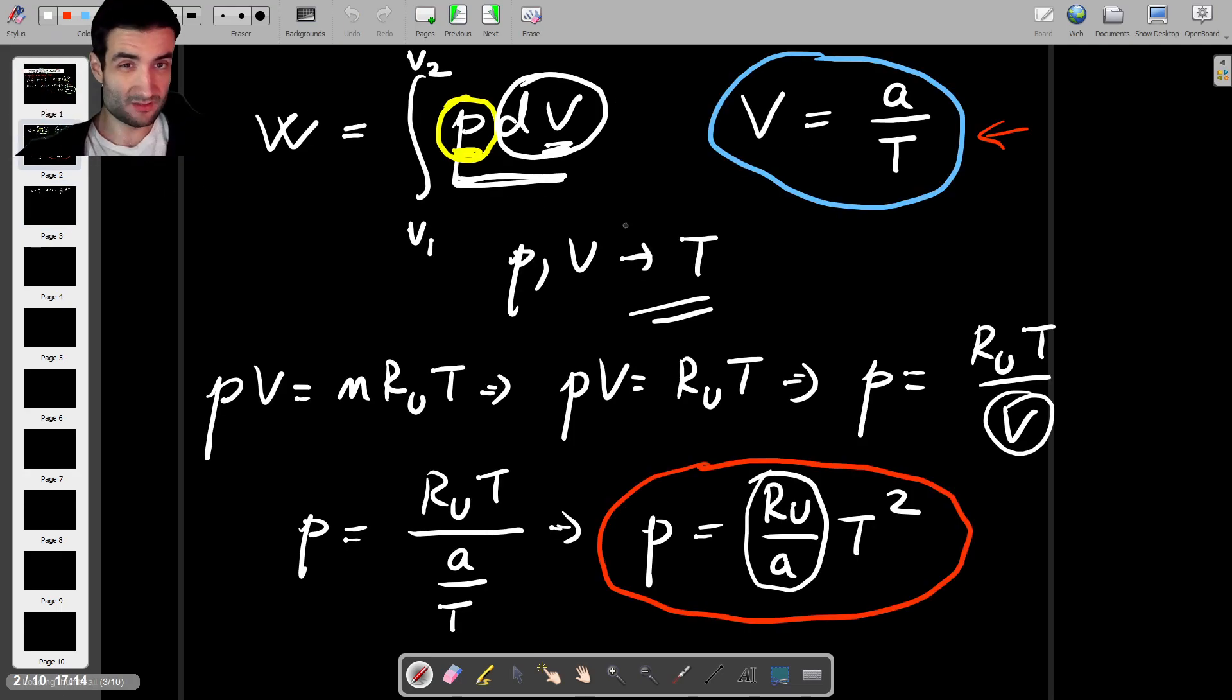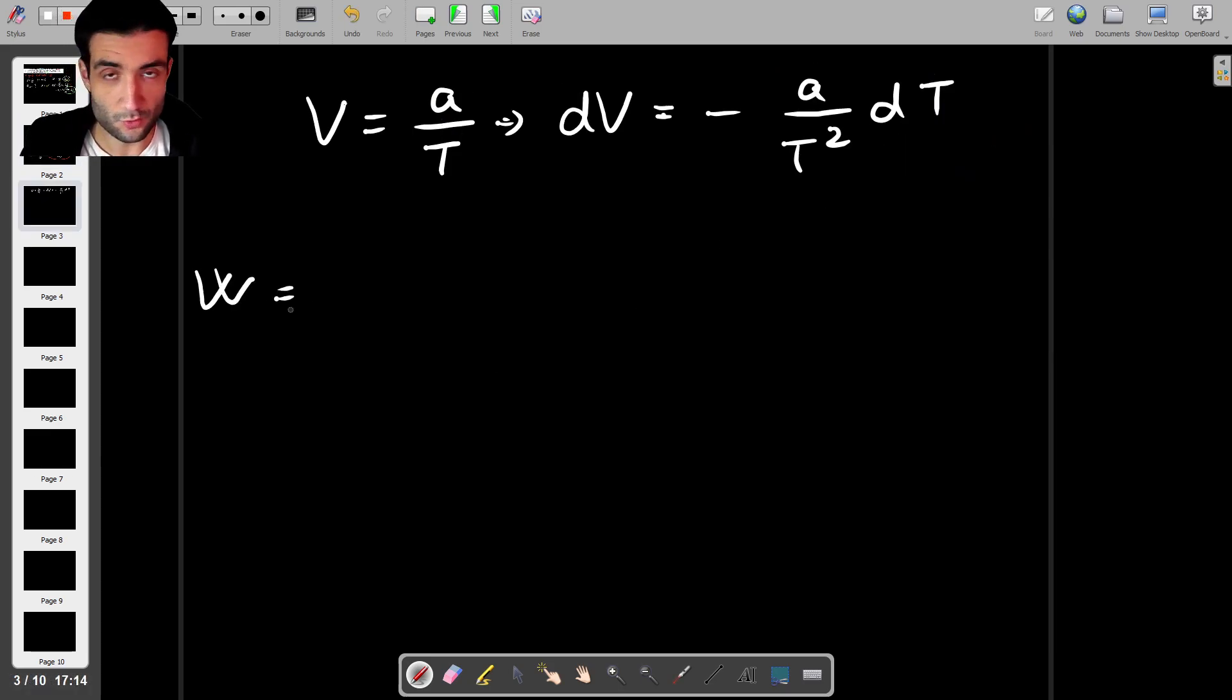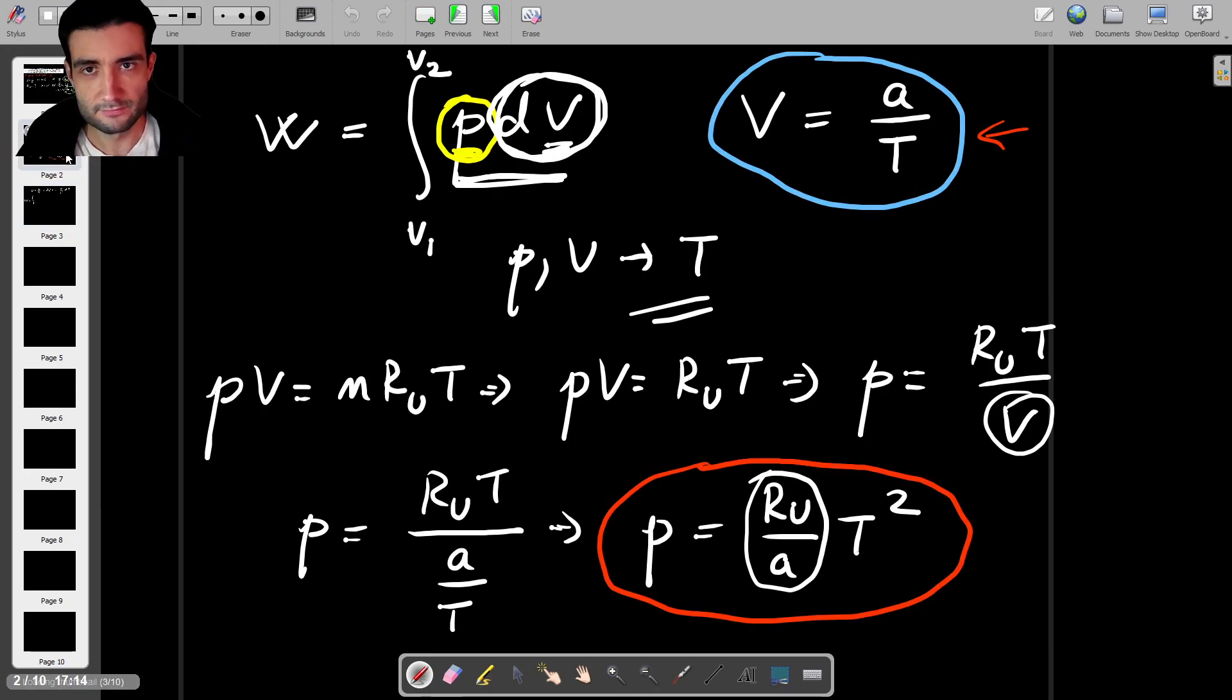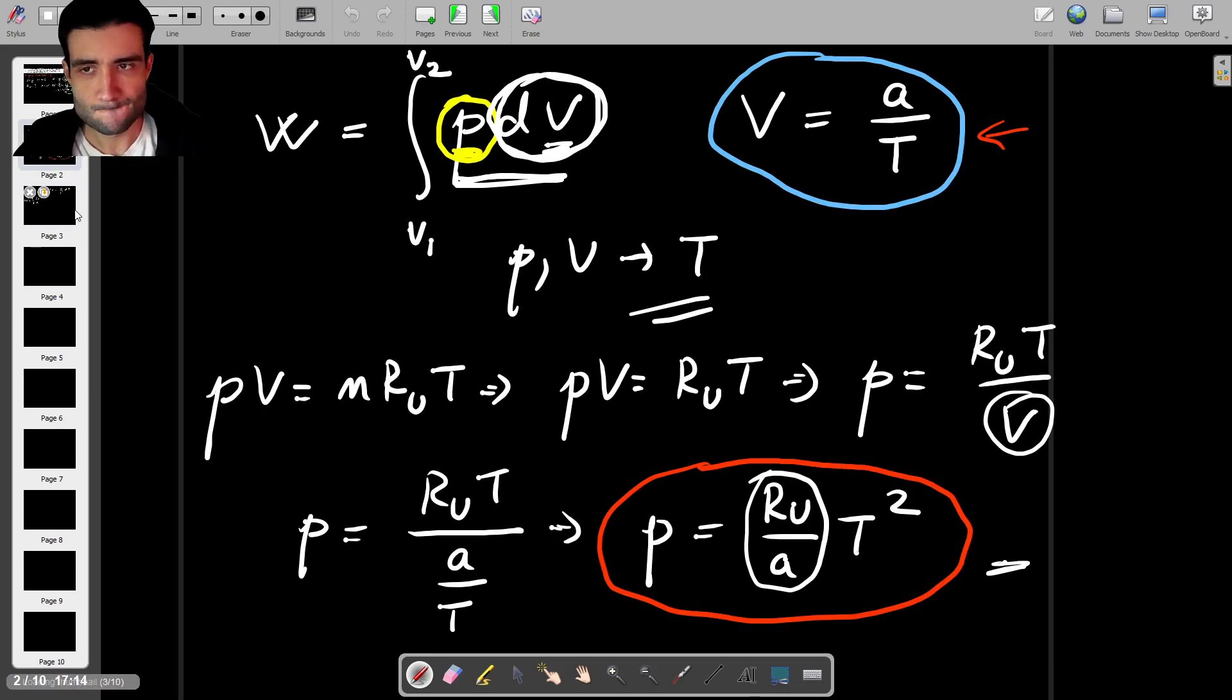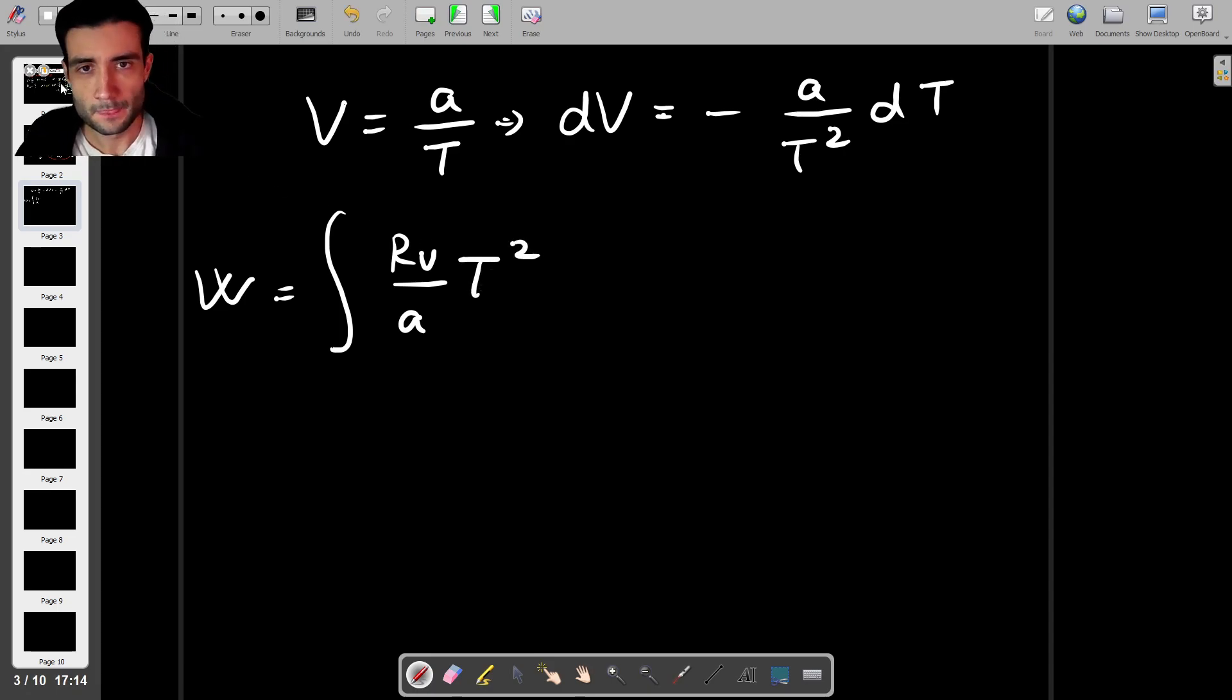Okay so we wanted to convert not just V and P in terms of T but also this dV. So let's write the formula for work. So we have work equals the integral of and now instead of P I'm going to replace P with this which is RU over A T squared and then instead of dV I'll write minus A over T squared dT and we're doing everything in terms of temperature so this is going to be from temperature 1 to temperature 2 whatever they are.